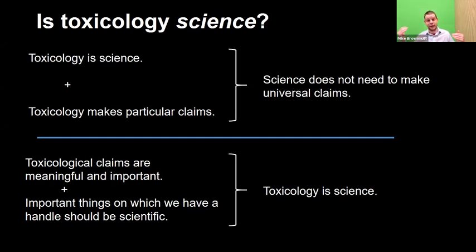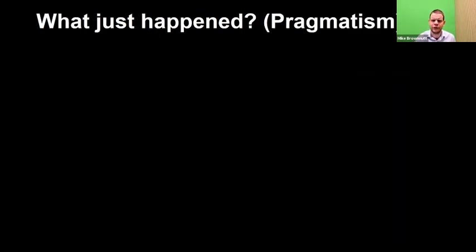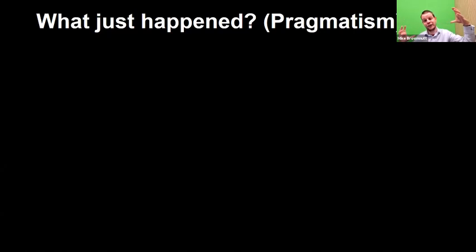We need to lose universality in science at one end or the other. What people have chosen is to say: scientific claims don't each individually need to be universal — they can make particular claims and we're okay with that. We've just rewritten what science can do. And we've embraced it — not grudgingly, but joyfully — saying this is a good thing and science should be like this. The thing that's just happened is pragmatism.